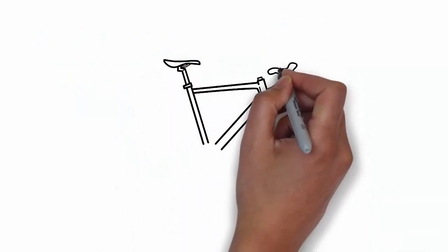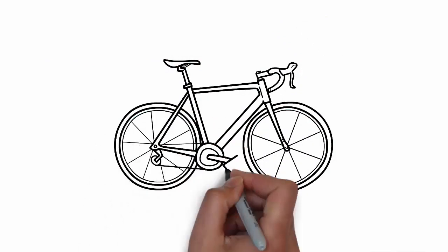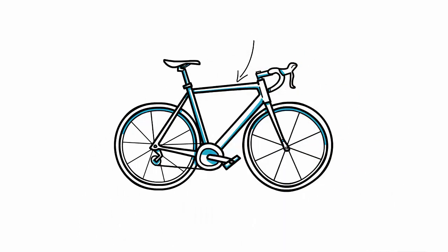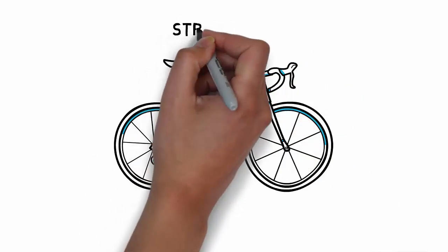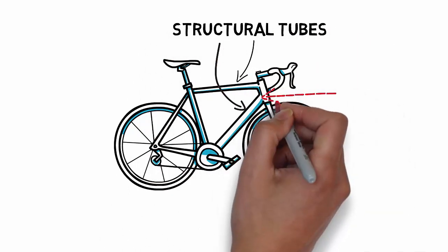I encountered the second class of joining method when commuting to work on one of the most common modes of transportation here in the Netherlands, the bicycle. If you look at the frame of a bicycle, you see that it is an assembly of structural tubes that have been joined together where the ends of the tubes meet.